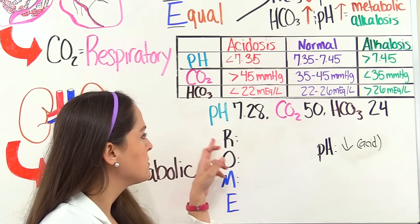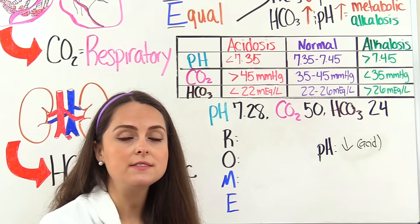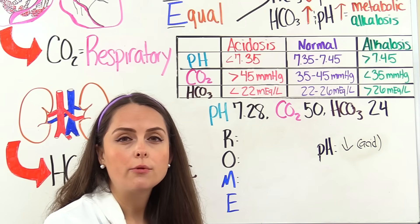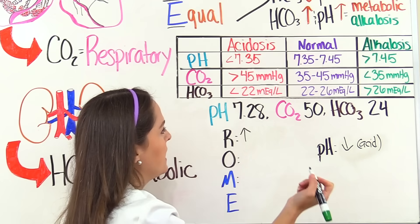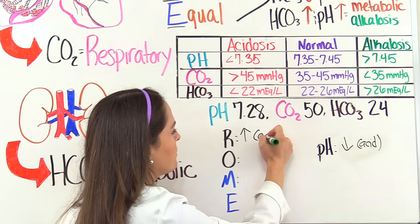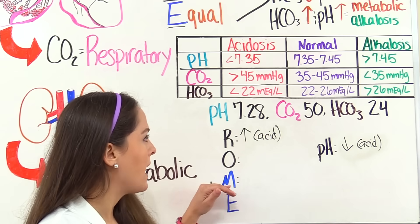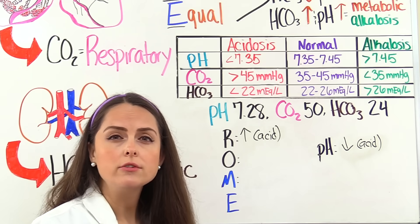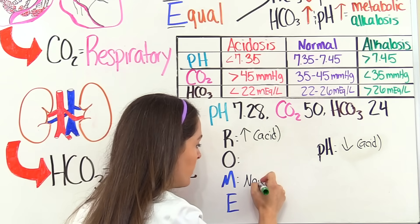Then we look at the respiratory system, represented with CO2. It's 50. Normal carbon dioxide level is 35 to 45, and we're on the high side — elevated — so anything greater than 45 is acidotic. We'll write 'acid' there. Then we look at our bicarb level, represented with the M of our acronym — metabolic — and it's 24. Normal level is 22 to 26, so we're actually normal with our metabolic level.